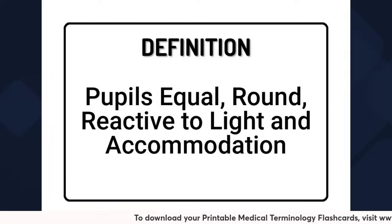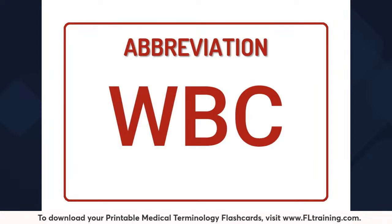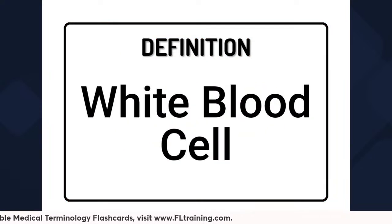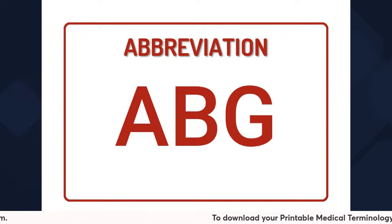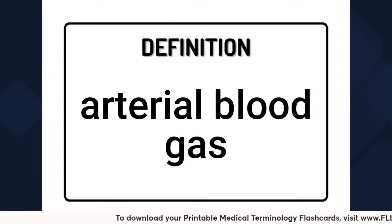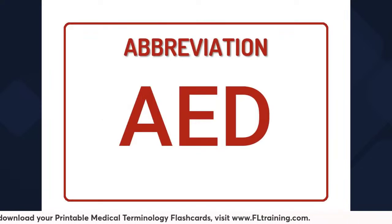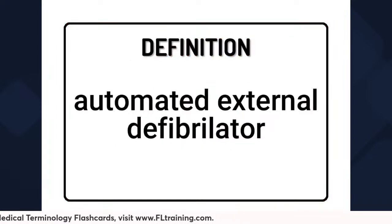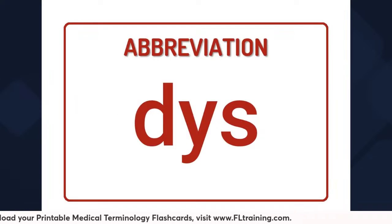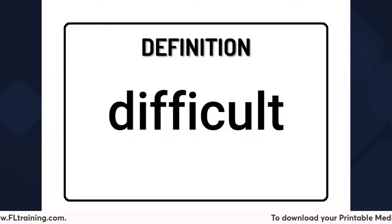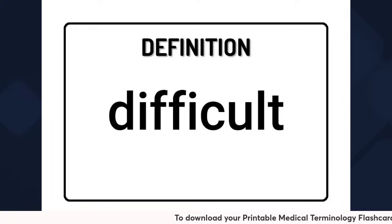W-B-C is the abbreviation for white blood cell. A-B-G is the abbreviation for arterial blood gas. A-E-D means automated external defibrillator — it's the device used to help normalize a person's heart rhythm when they are in cardiac arrest. D-Y-S as a prefix means difficulty or pain, such as dysuria, or painful urination.